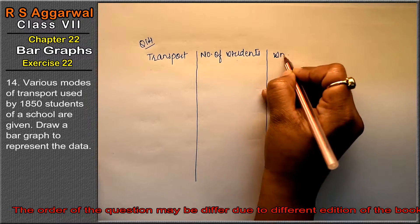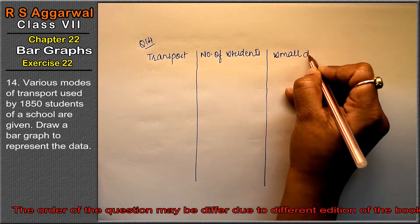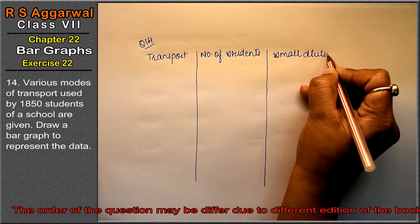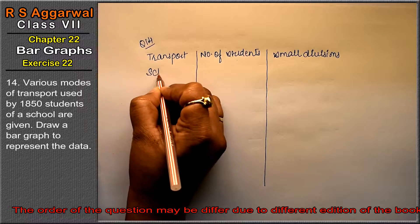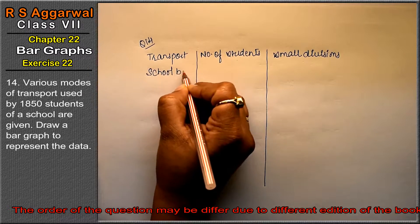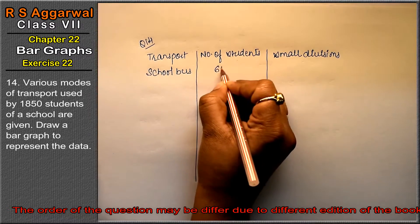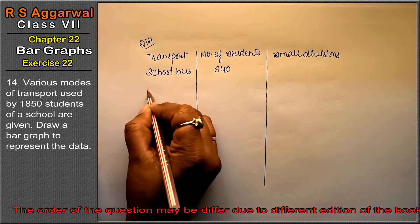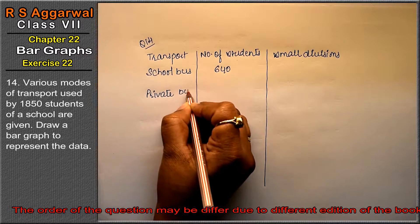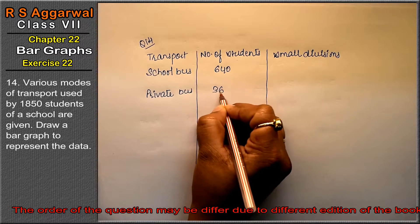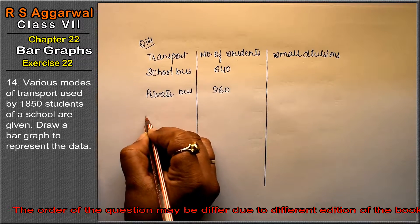Again, we need to determine small divisions. First is school bus: 640, then private bus: 360, then bicycle: 490.